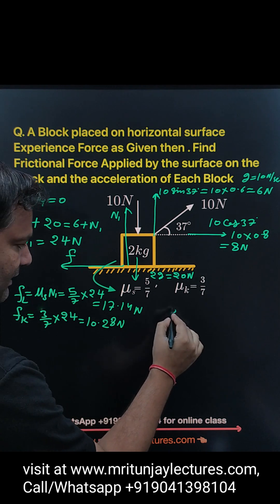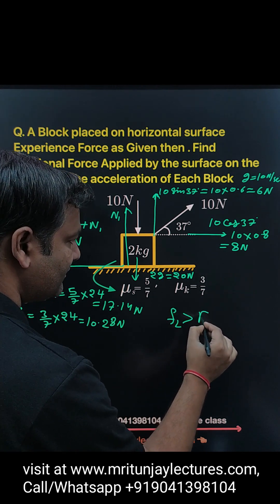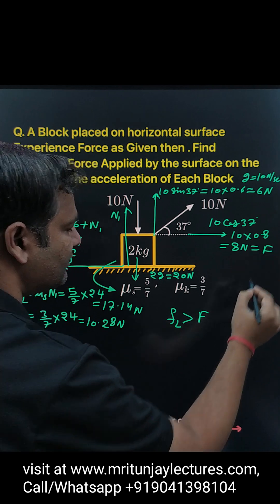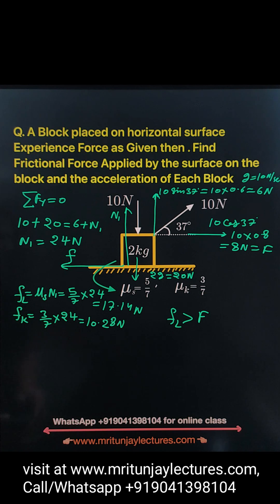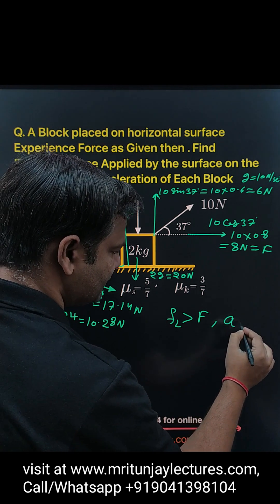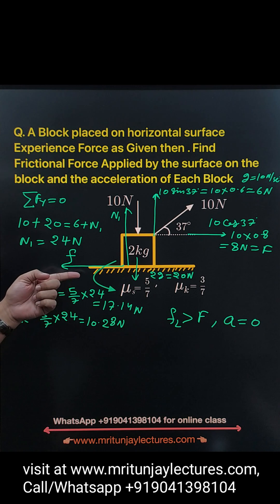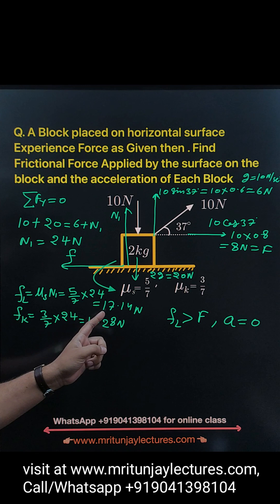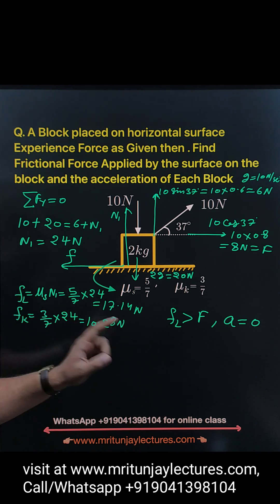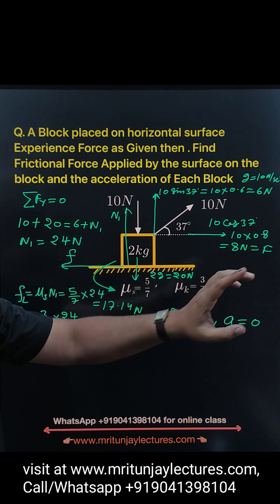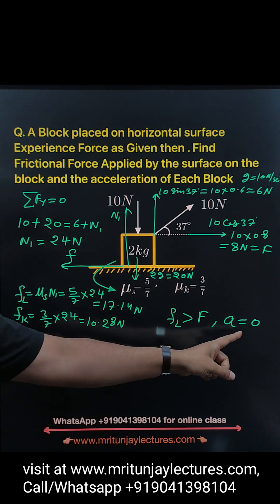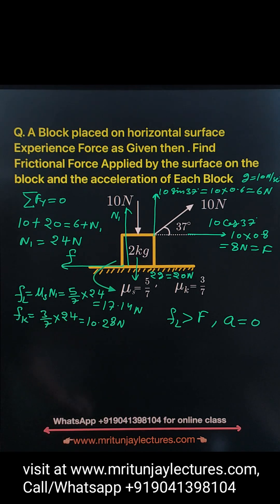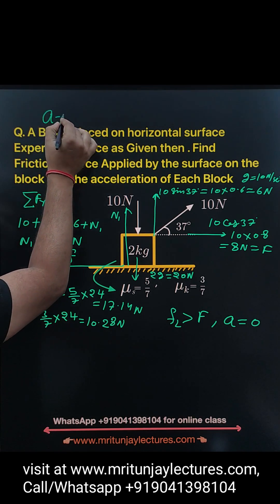The limiting frictional force of 17.14 Newton is greater than the driving force of 8 Newton. So the block is not moving. This means the acceleration of the block is 0.